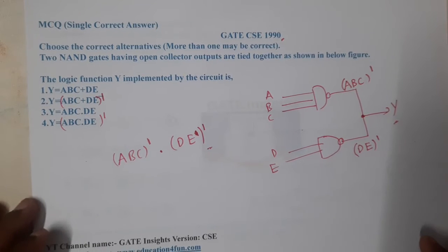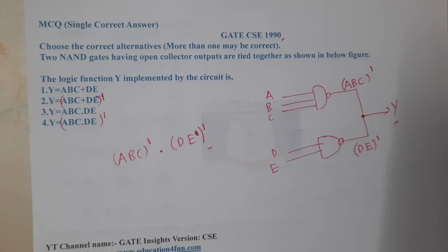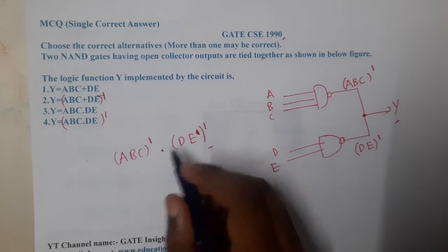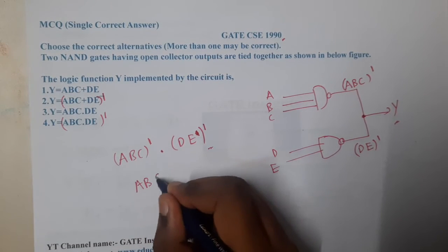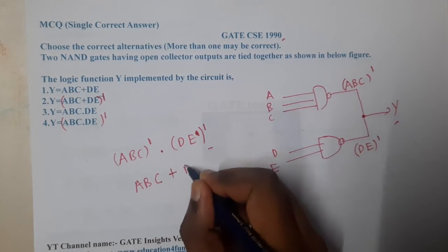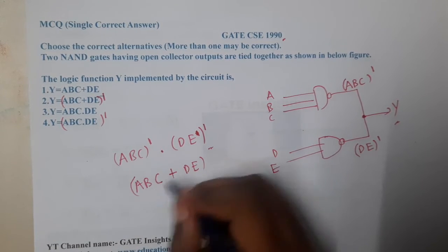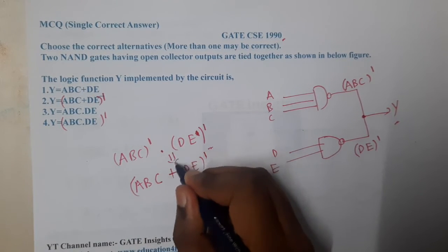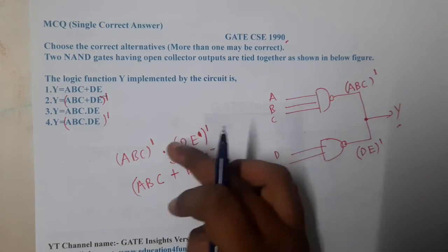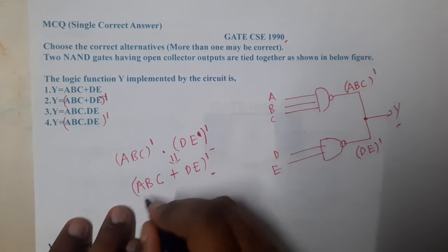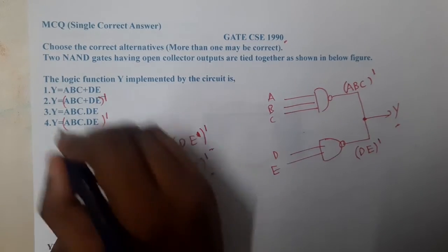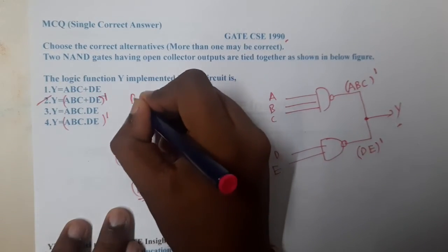So one trick which we can apply is let us try to apply complement for this. That is nothing but ABC plus DE whole complement. So you can assume it as I have taken the complement outside, or I have applied a double complement. So anything you can assume. Is there any option with this? Yes, the answer is A2 or B, so option B is matching.